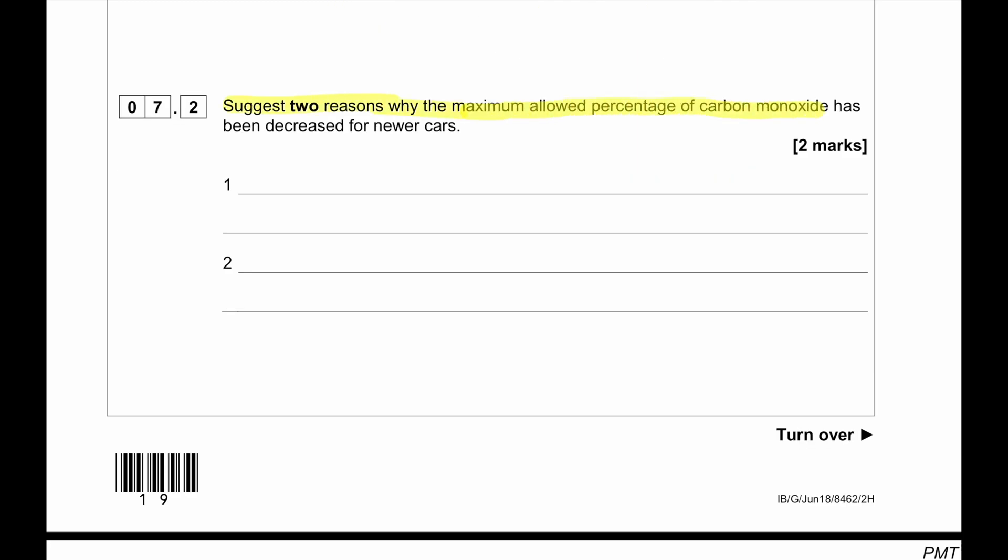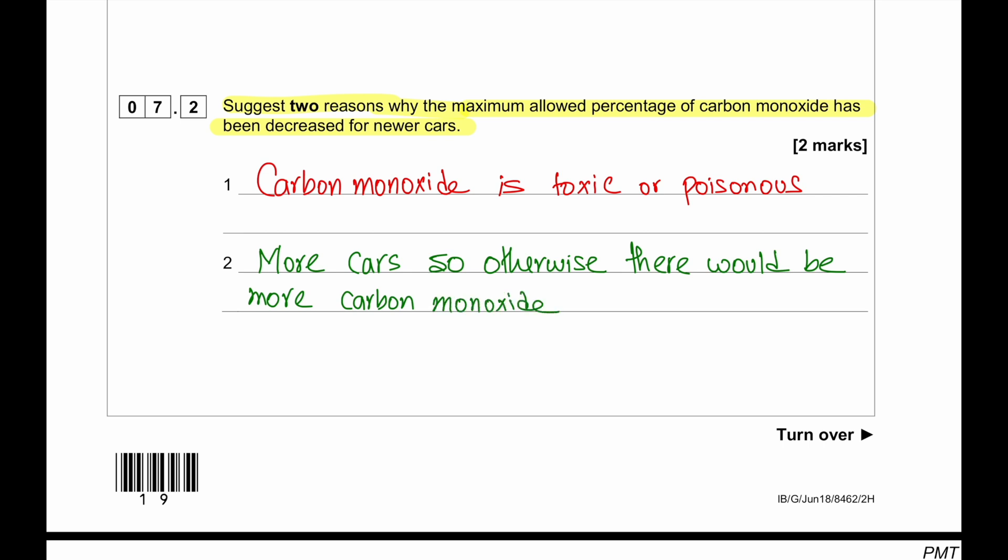Suggest two reasons why the maximum allowed percentage of carbon monoxide has been decreased for newer cars. Carbon monoxide is toxic, it's poisonous. So as a result, there is a greater concern for public health due to carbon monoxide pollution. More cars in the road. So if there is more carbon monoxide produced by a single car, then it will very soon enter the atmosphere and contaminate everything around. Since the new engines are more improved, the tolerance should be lesser. So that even if the number of cars increase in the road, it's not a big deal. And catalytic converters have been introduced and catalytic converters reduces the amount of carbon monoxide technically to zero. As the engine keeps on running, carbon monoxide level goes to zero because of the catalytic converter. By the way, catalytic converter needs to stay clean.